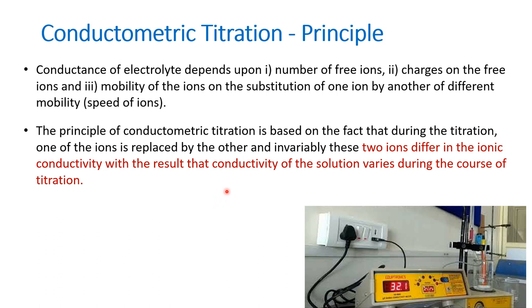The mobility of the ions will change, and accordingly conductance will change. This change in conductance will help us to understand the titration, and we can even identify the end point of the titration. When we do a normal titration, we calculate the end point using an indicator, and the color change of the indicator helps us find the end point.